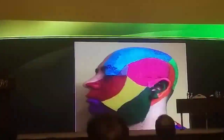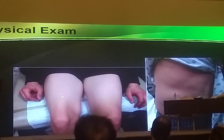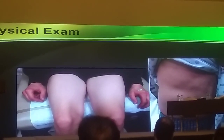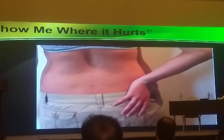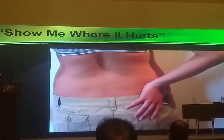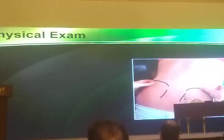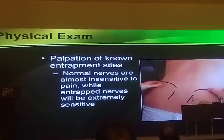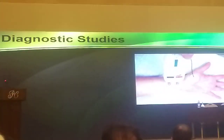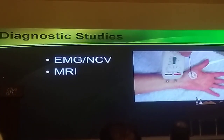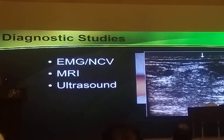You need pattern recognition and inspection to identify atrophy or bulging. Ask where it hurts and have the patient show you — that gives a great deal of information. On physical exam, palpate known entrapment sites, because these nerves when sensitized are exquisitely tender. Diagnostic tools include EMG, MRI, ultrasound, and various other methods of evaluating patients.